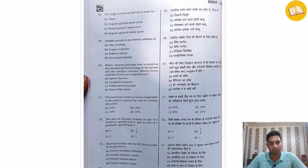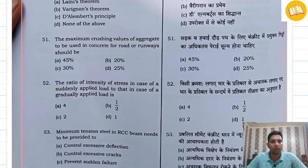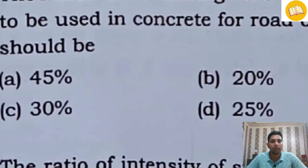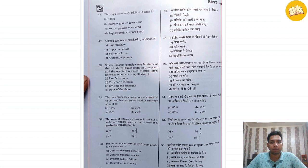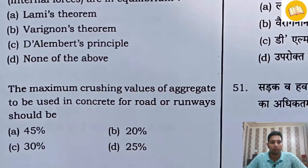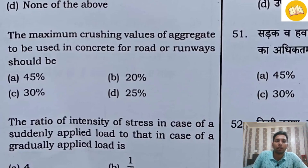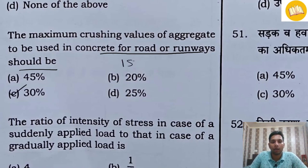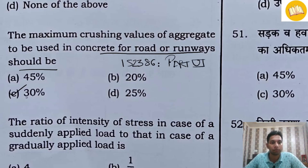In this phase we can see question 51. The question states: the maximum crushing value of aggregate to be used in concrete for roads or runway should be. Its answer is 30 percent. This is directly written in IS code 2386 Part 6. You can refer to this code and confirm the answer is 30 percent.